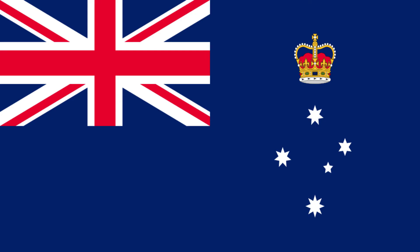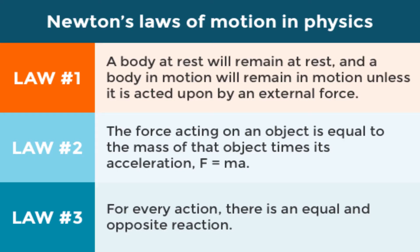Fun fact, Victoria, right here in Australia, was the first country to make it compulsory to wear a seatbelt in 1970. Now that we've learnt about the history of seatbelts, it's time to find out what Newton's laws of motion are, and how they relate to seatbelts.